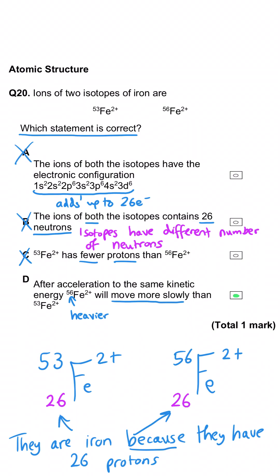So that means that D has to be correct. It's telling us that the heavier isotope will move more slowly than the lighter one. And that's how the time-of-flight mass spectrometer works.